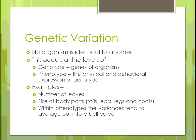The size of body parts — like tails, ears, legs, and hooves in animals — also varies, as does leaf size on a single tree. Within these different expressions of characteristics, variations tend to average out within a certain range. Some organisms will have tails, some won't; some will have longer legs than others. But if you look at the average, they all fall within a certain range.